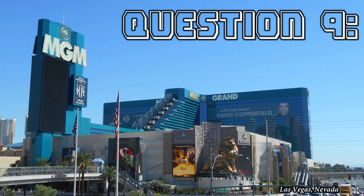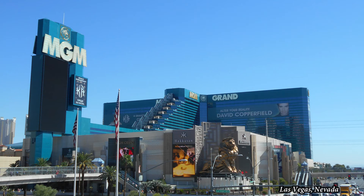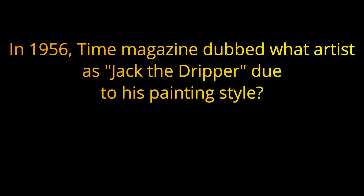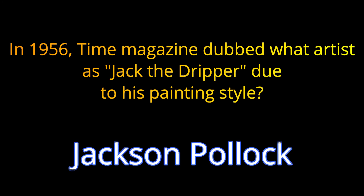Question 9. In 1956, Time Magazine dubbed what artist as "Jack the Dripper" due to his painting style? The answer is Jackson Pollock.